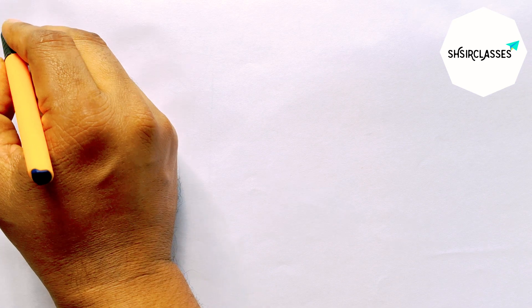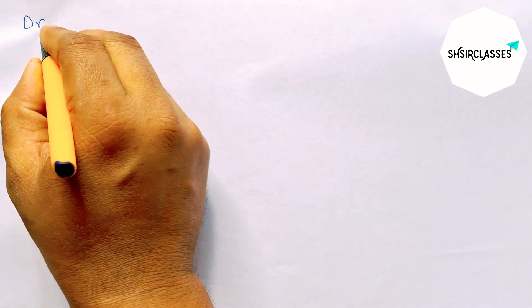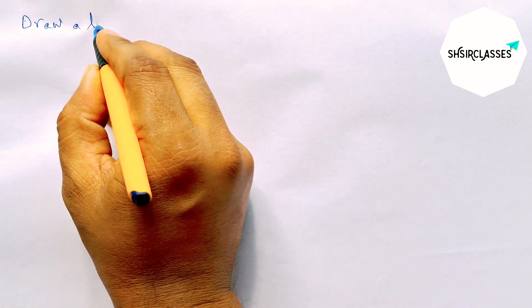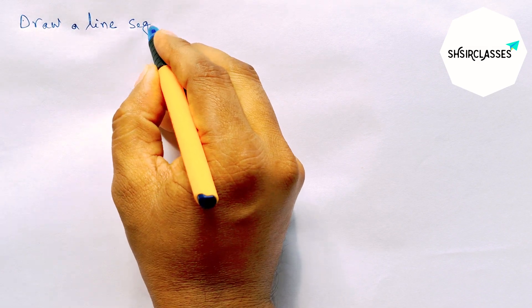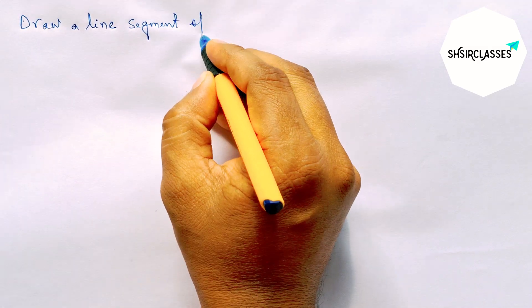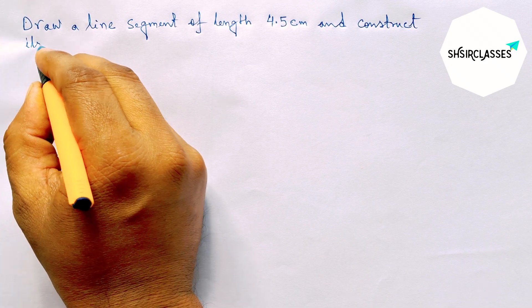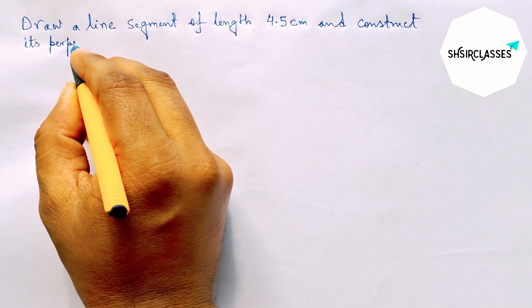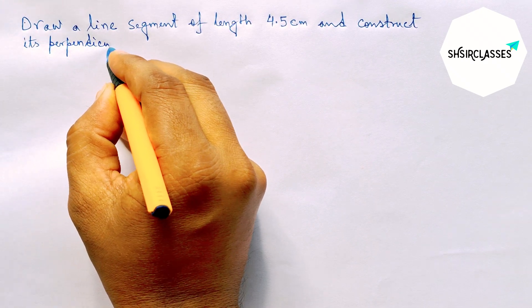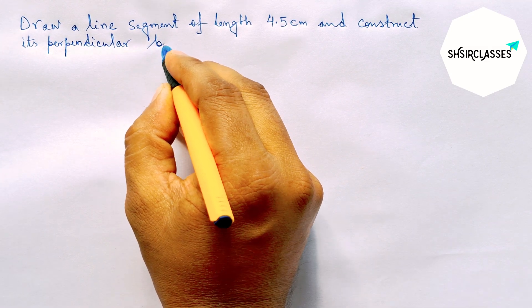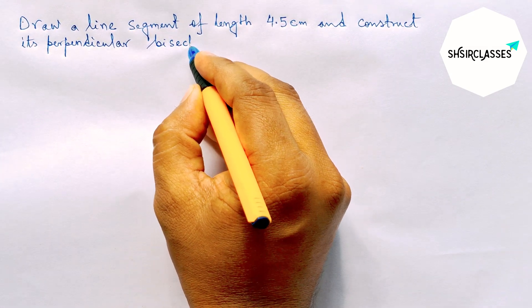Hi everyone, welcome to essay share classes. Today in this video, draw a line segment of length 4.5 centimeter and construct its perpendicular bisector to the line segment AB in easy way. So please watch the video till the end.